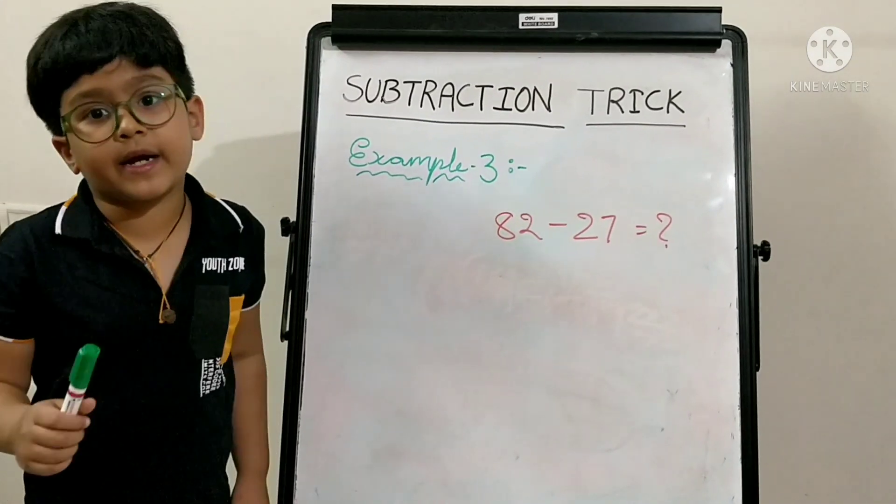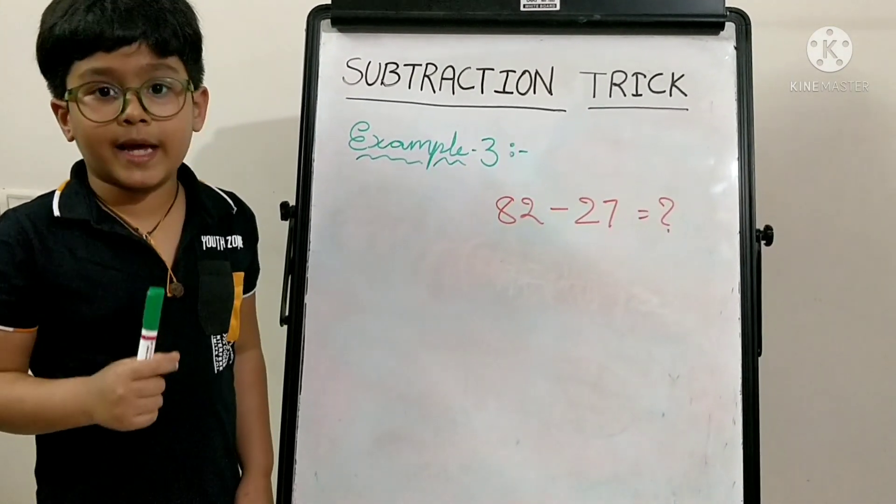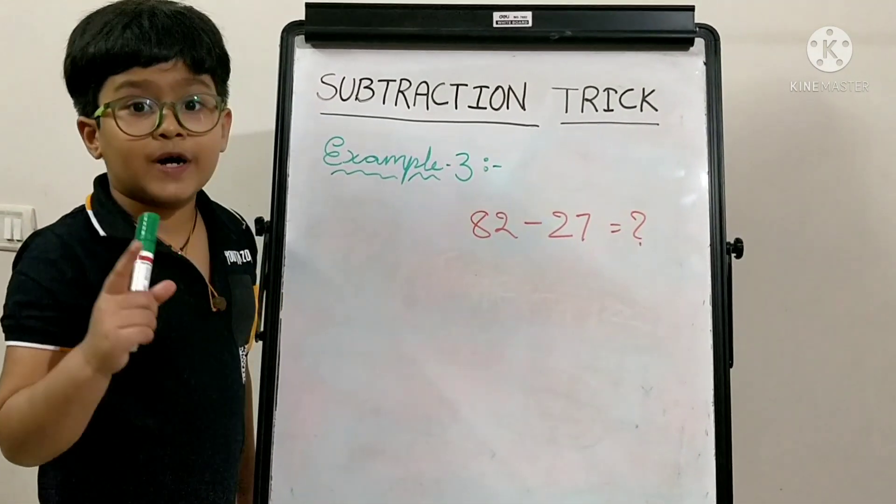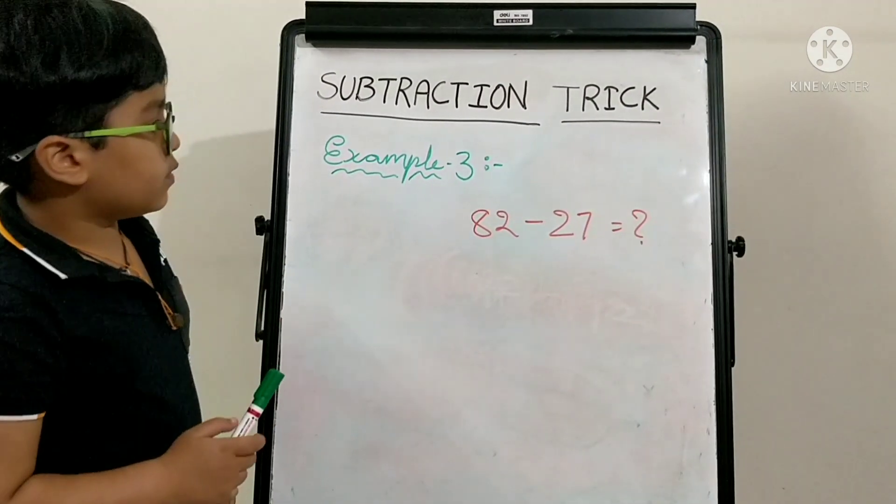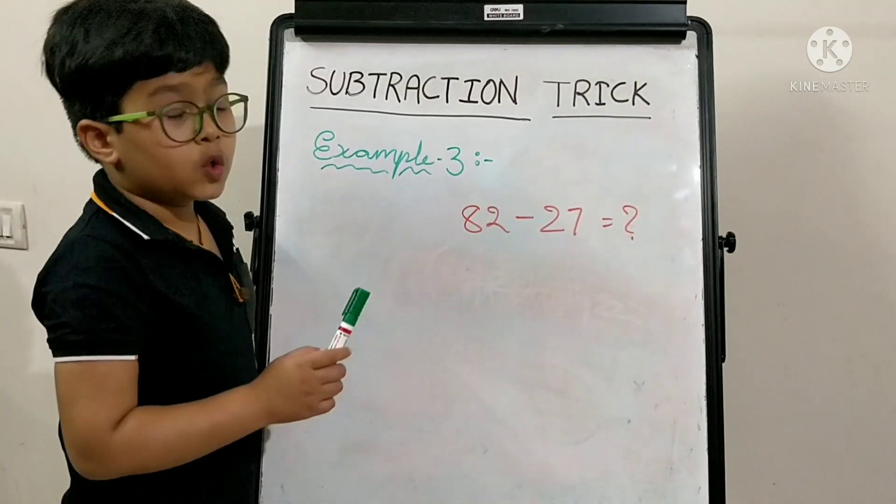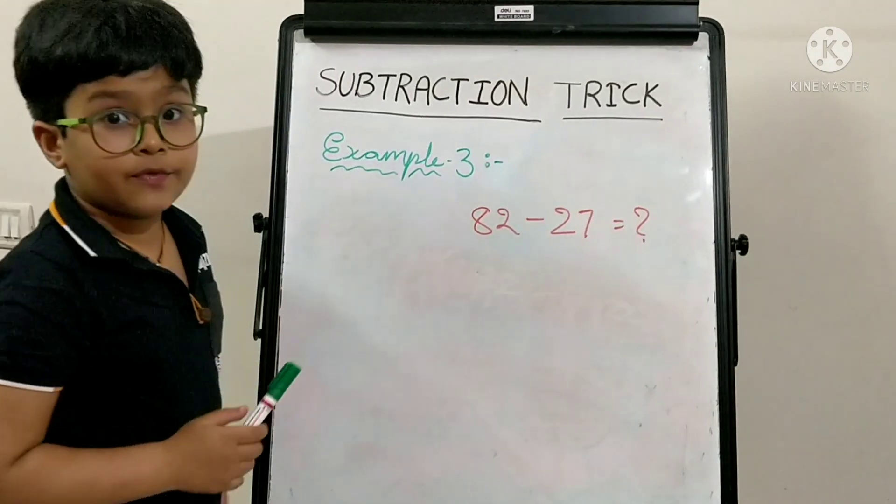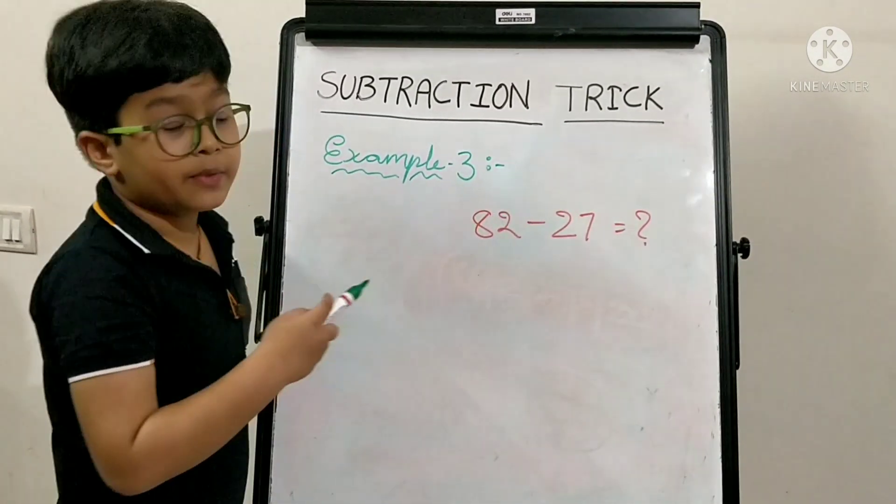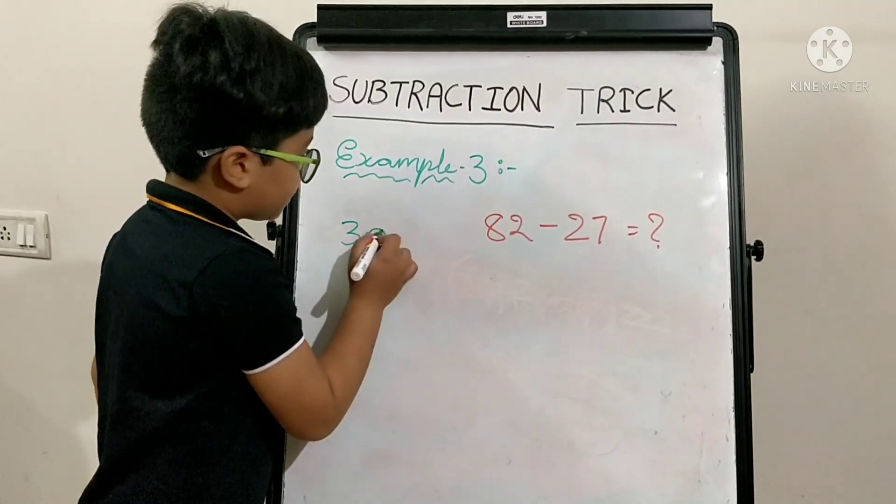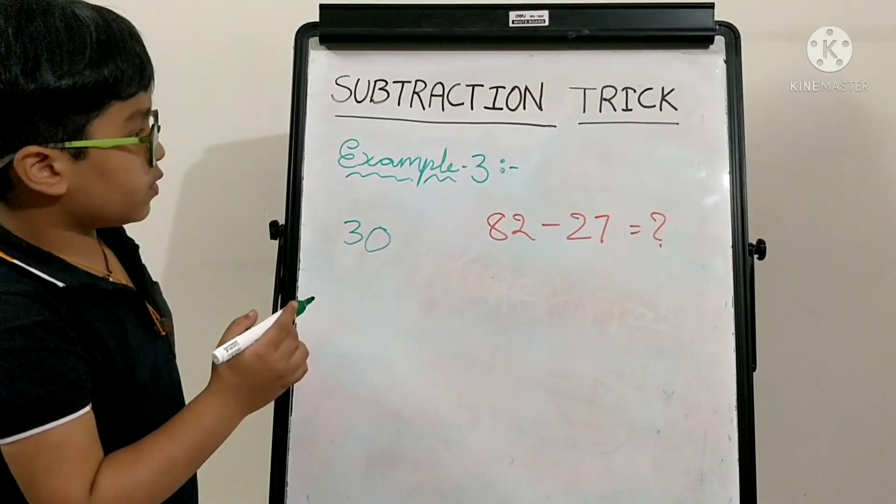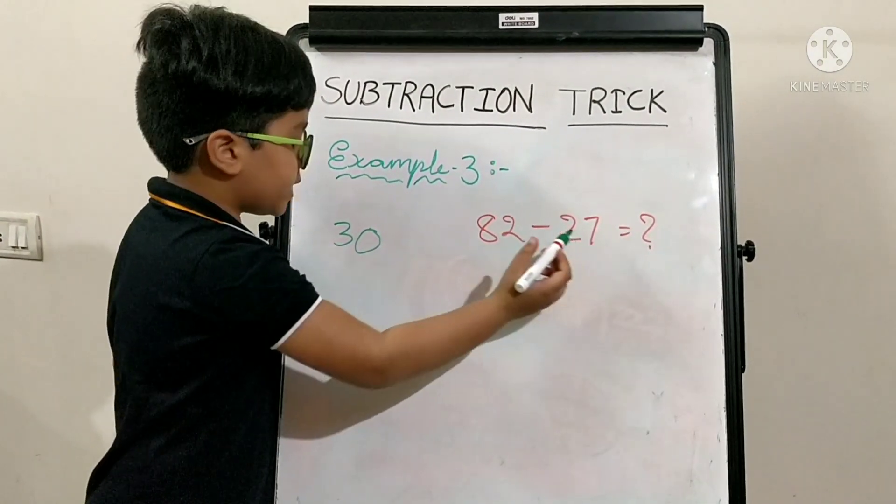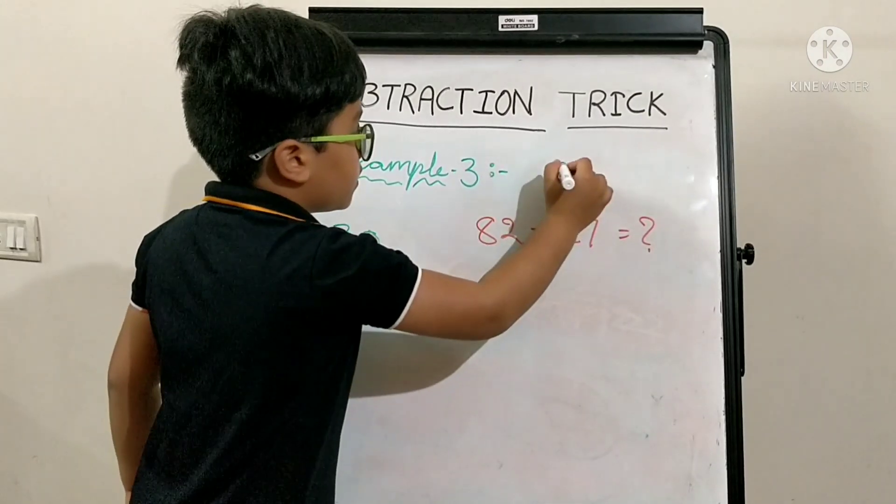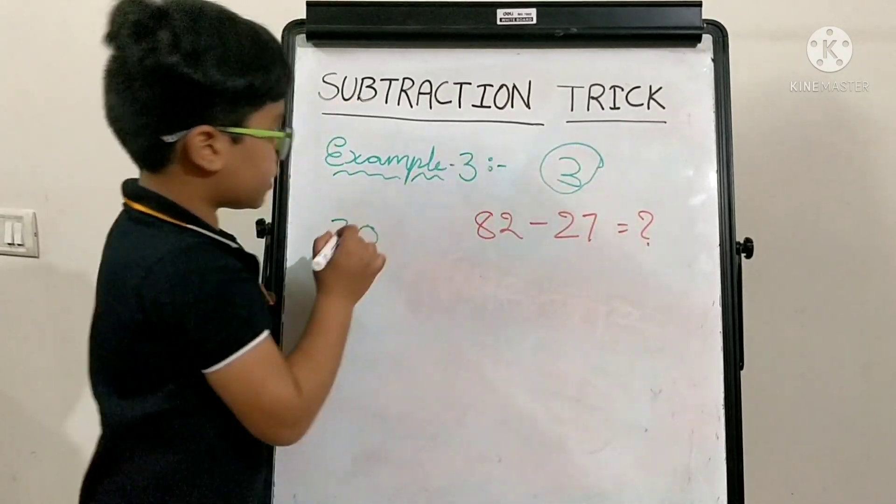For more understanding, I am taking one more example. 82 minus 27. The first step is, you have to find the closest number to 27 in 10th table. The closest number to 27 in 10th table is 30. You have to think how much if you add 27 is equal to 30. 27 plus 3 is equal to 30.